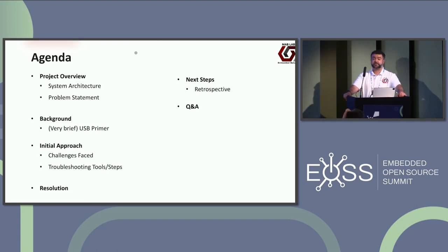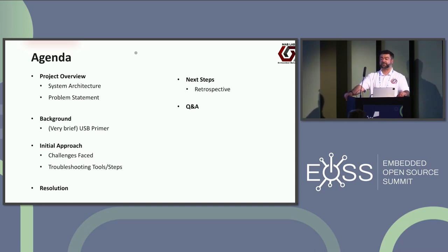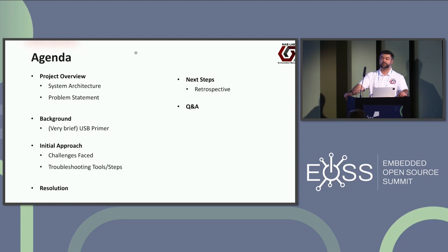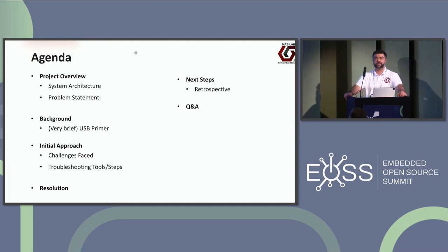For today, here's a simple agenda. First, we're going to talk about the project — the system architecture and problem statement. Then a quick USB primer just to level-set the conversation. Then we'll go over the initial approach to implementing this custom driver, the challenges we faced, how we debugged those issues, what tools we used, and what the final resolution was — which in my opinion wasn't the greatest, but we had to get a solution out the door. And then next steps if I were to redo this project, which I'm actually working on now. We'll conclude with questions.